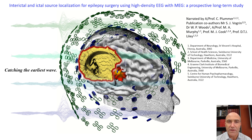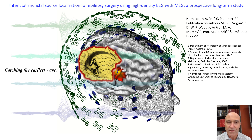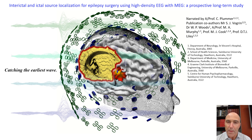Here we give the main findings from our epilepsy surgery paper using high-density EEG with MEG source localization. The image of the surfer catching the earliest wave signifies the importance of modeling the earliest resolvable electromagnetic signal for predicting the epileptogenic zone.